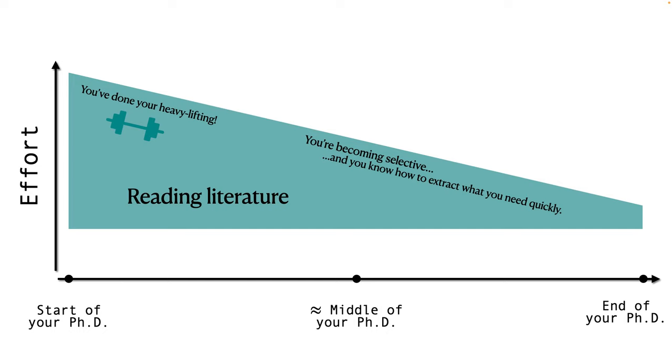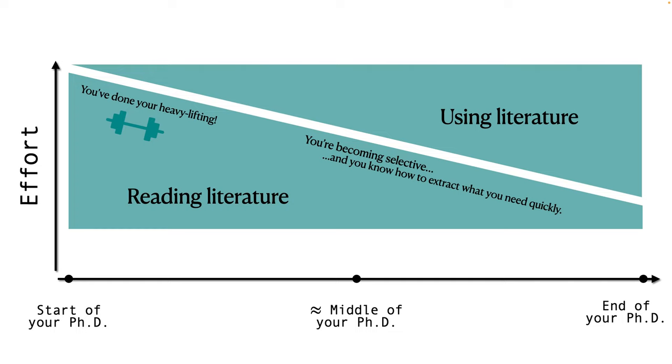Now, also notice that the effort spent on reading the literature doesn't go to zero at the end of your PhD. And it never should really. So as long as you're an academic, you should always dedicate effort to reading the new literature that's emerging. Now, the effort spent on using the literature might look like this. So at the beginning of your PhD, you won't be using the literature very much. This is when you're still starting off with your own research. But closer to the end of your PhD, you're becoming an avid user of the existing methods, tools, techniques, software, ideas. So you're constantly doing your own research in relation to the research done by others. But even to create your first publication, let's say somewhere in the middle of your PhD, you had to already use that much of other people's research. You were relating to that research in some way.